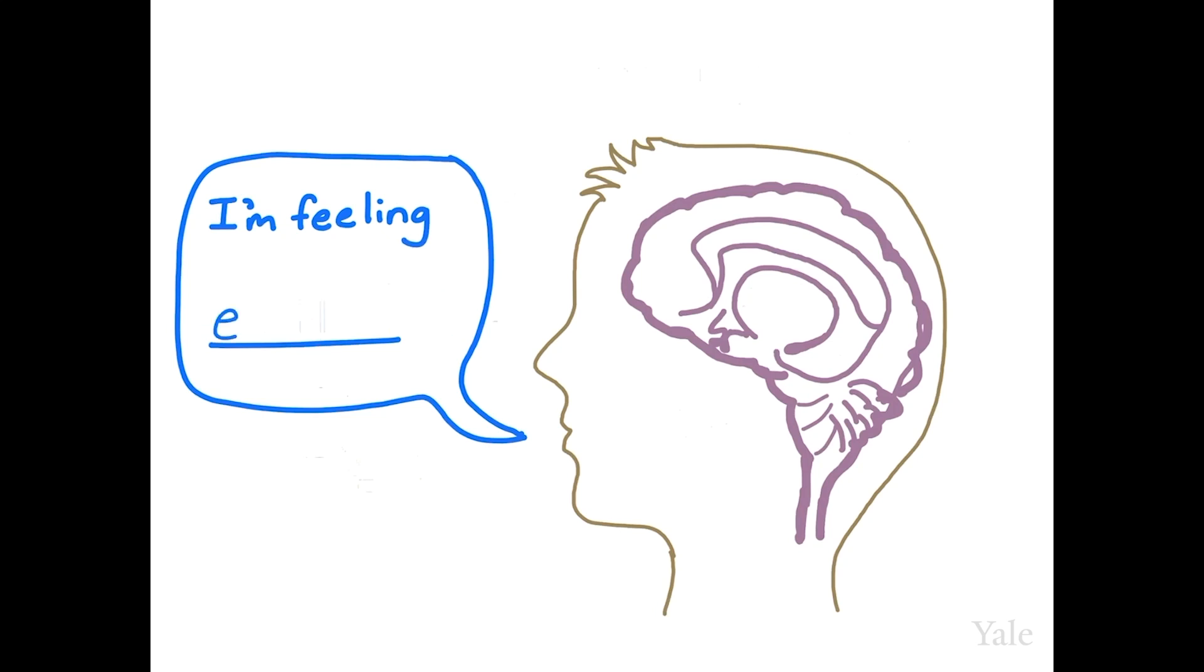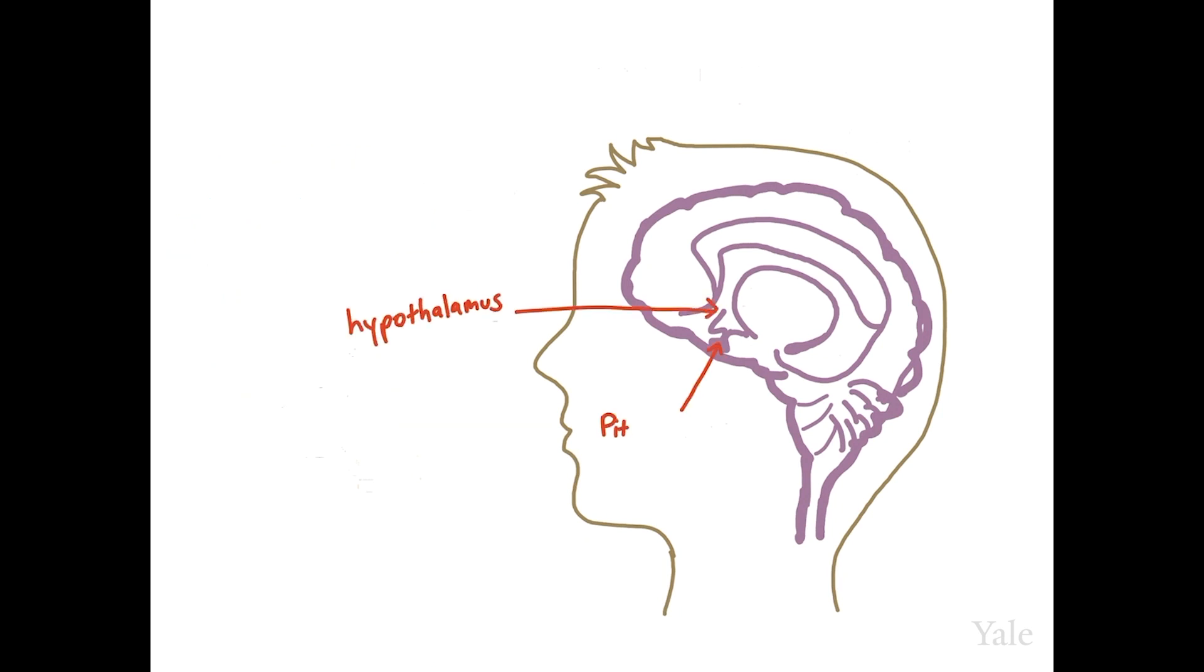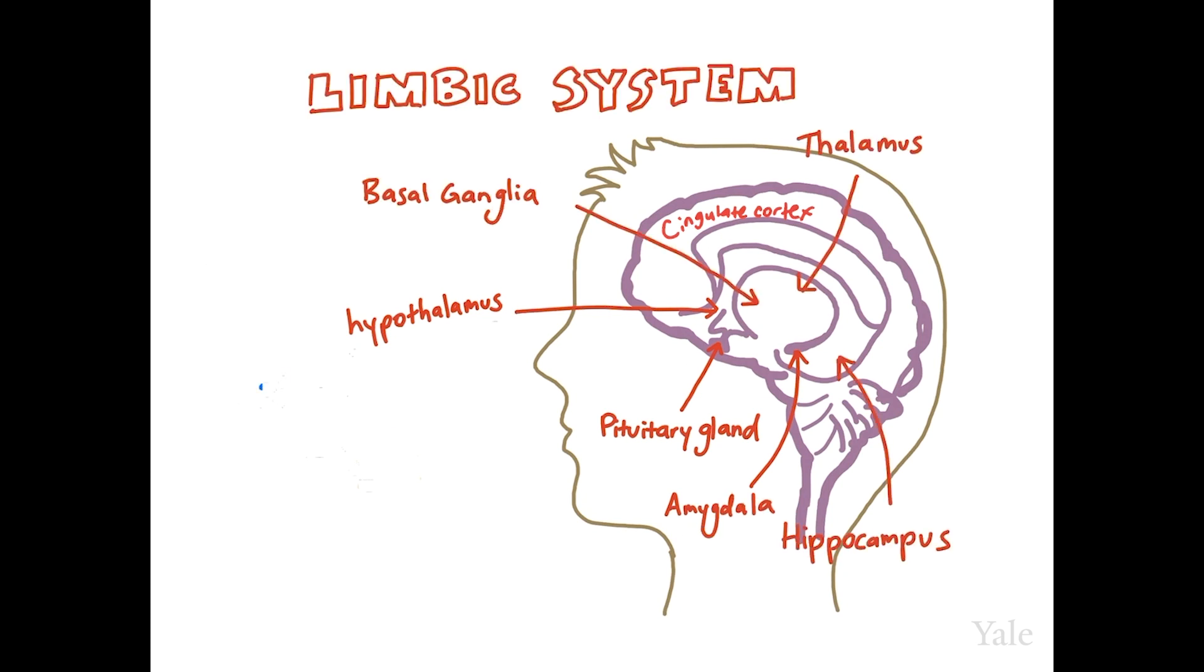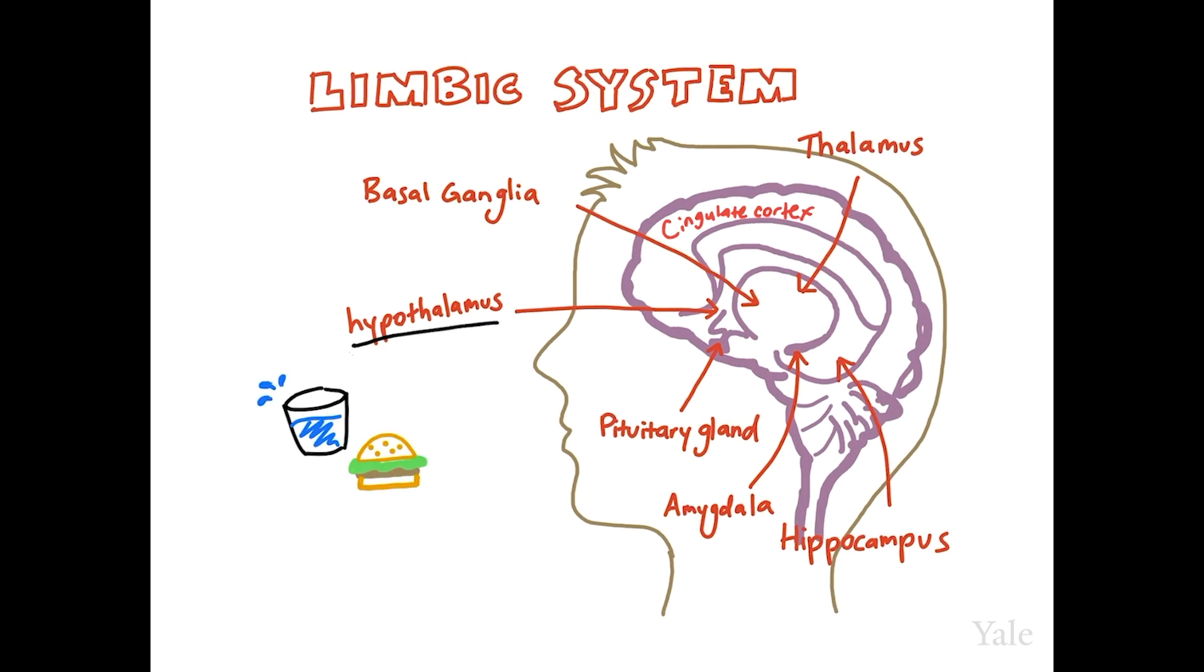Many brain regions are involved in processing emotional responses. These regions make up a network known as the limbic system. The hypothalamus regulates thirst and hunger, while the basal ganglia is a major player in reward processing.